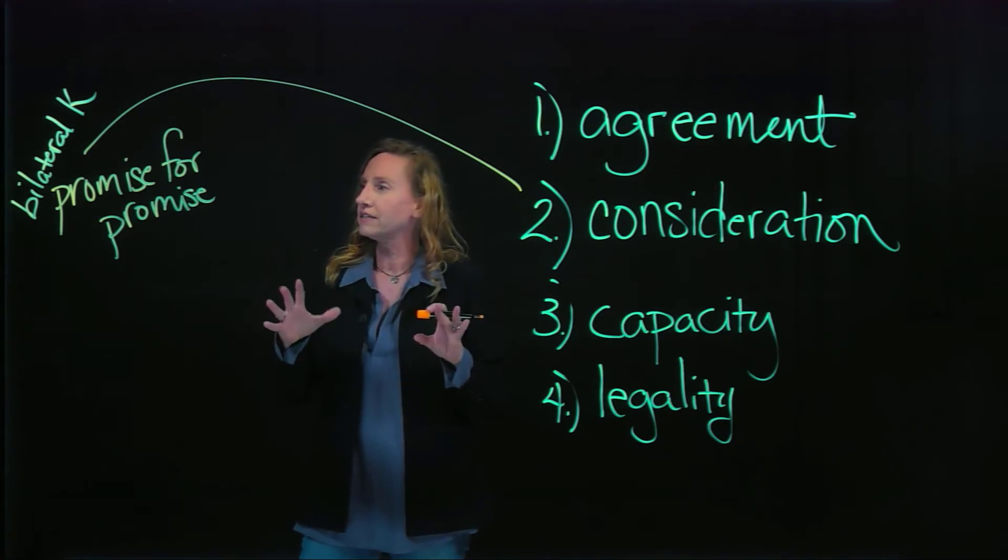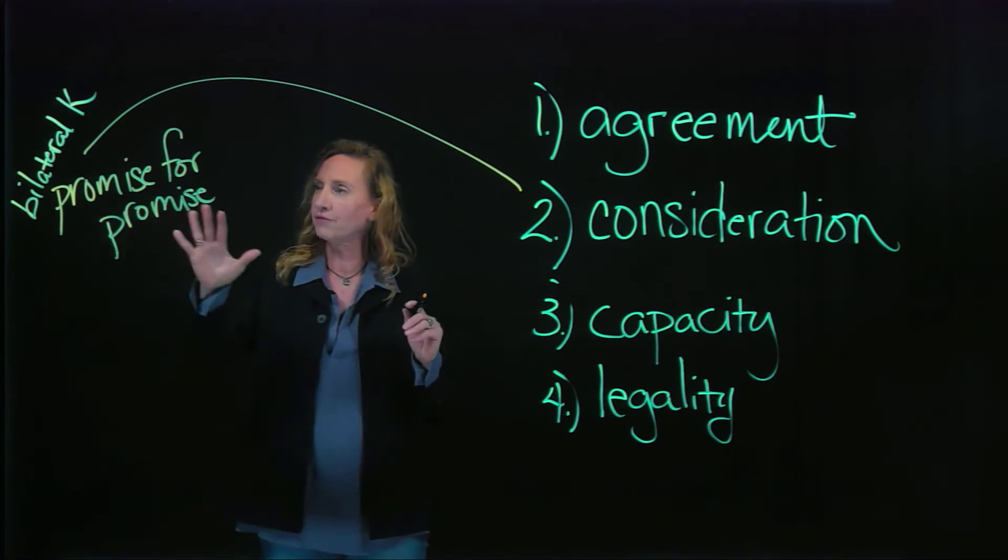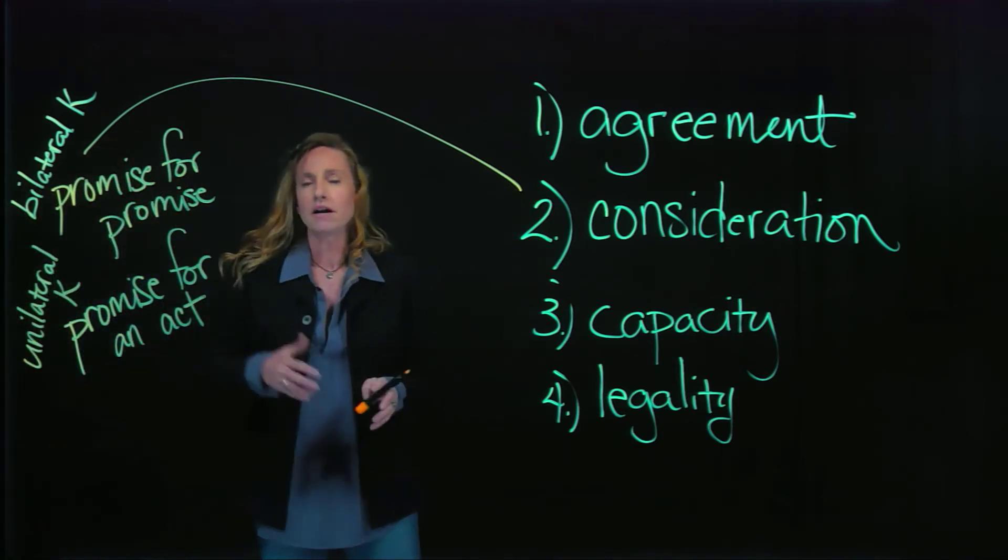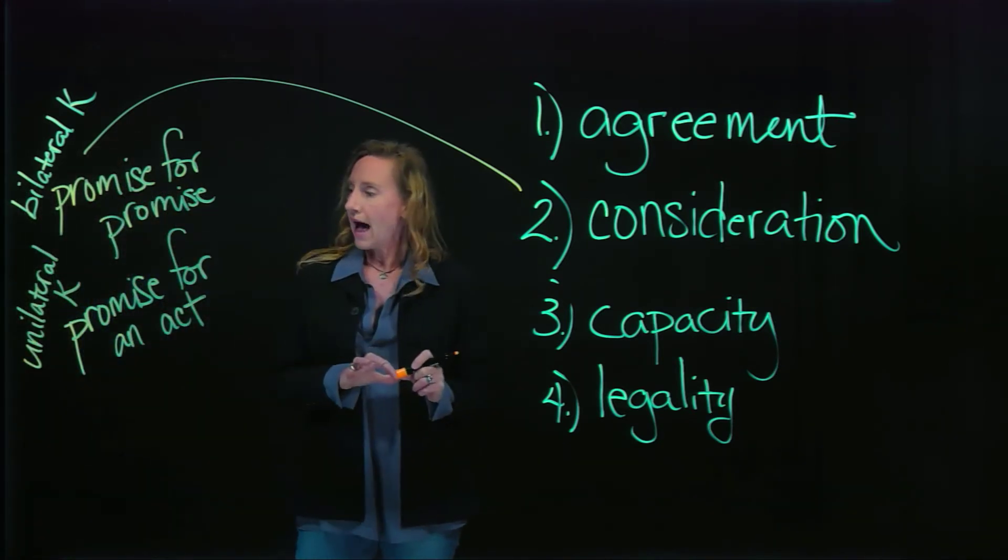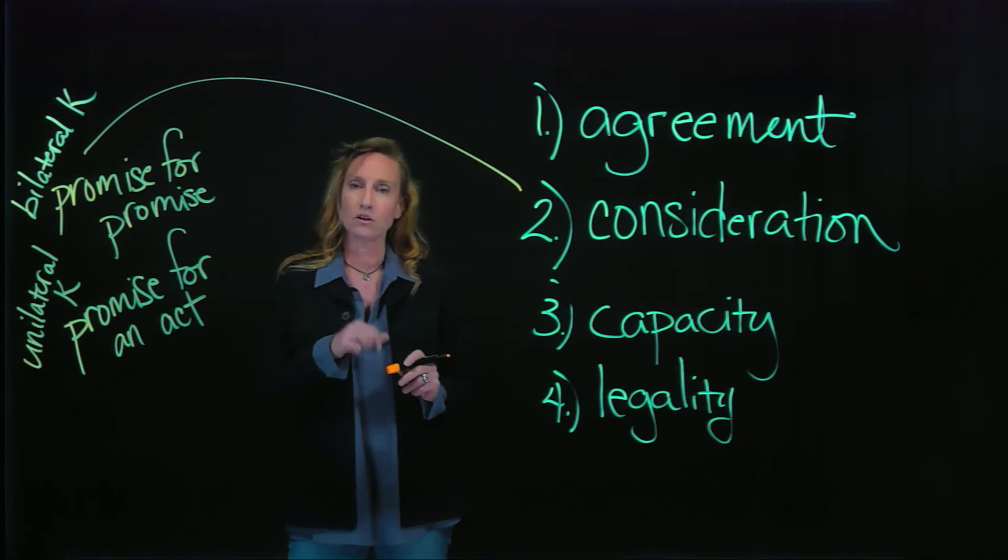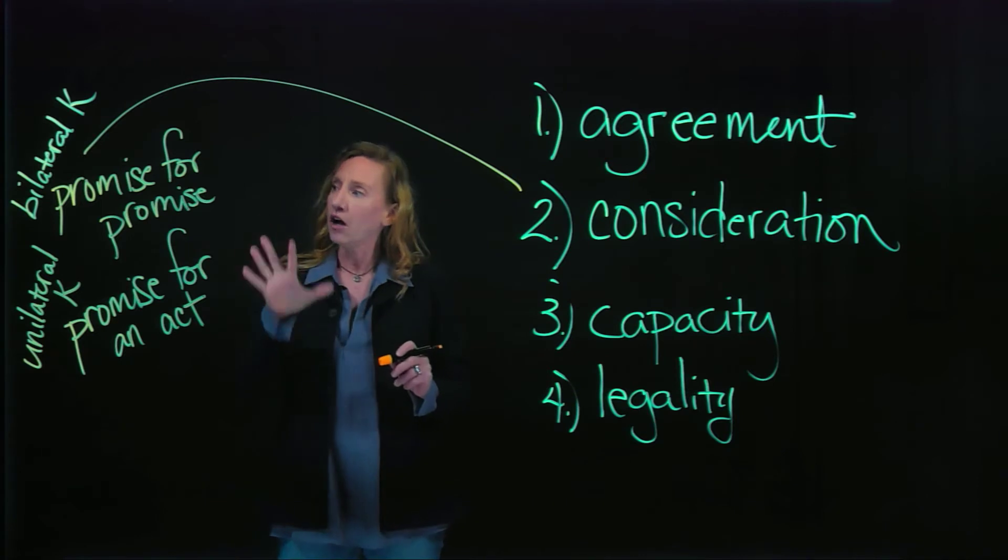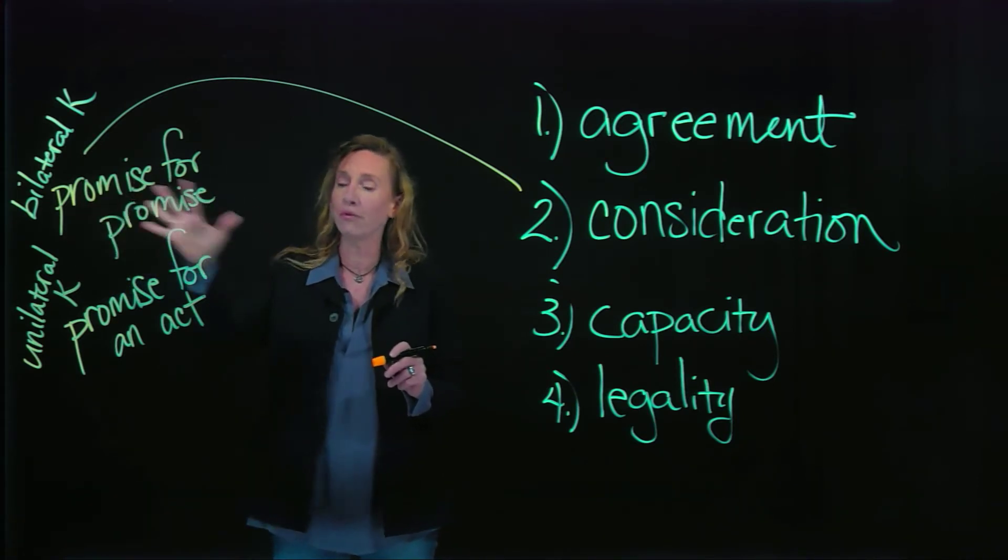Now, please recognize there's another type of contract, not a promise for a promise. There can be a contract that is a promise for an act. And this is called a unilateral contract, uni being one. So it's one promise for an act. In contrast to bilateral, B-I for two, two promises.